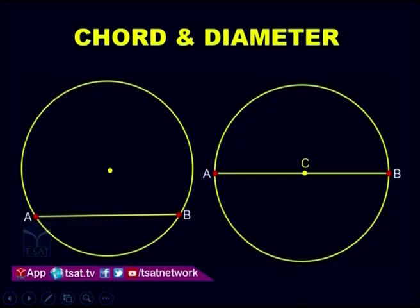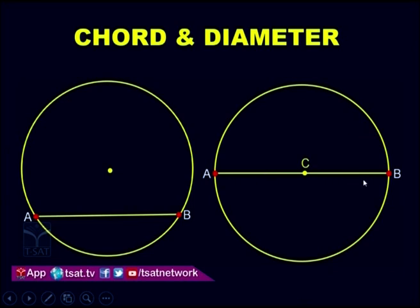Now look at this slide. We will quickly define chord and diameter. Here, AB is a chord — a line segment joining two points on the circumference of the circle. In the second circle, AB is a diameter. It is also joining two points on the circumference, but the condition is that it passes through the centre of the circle.